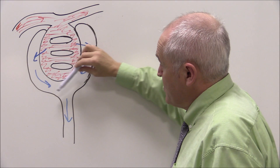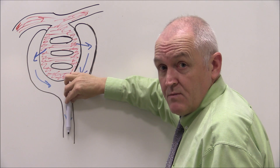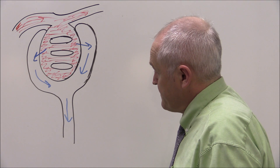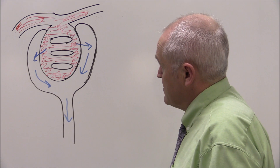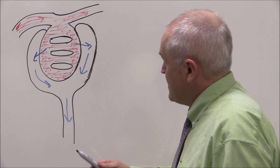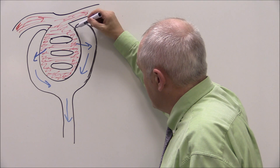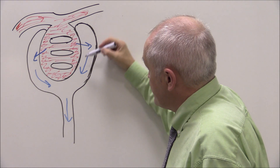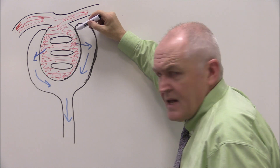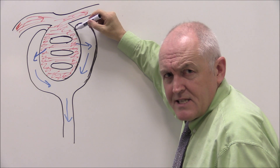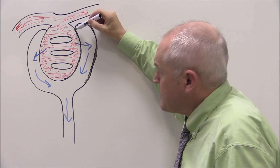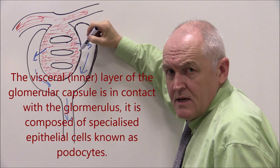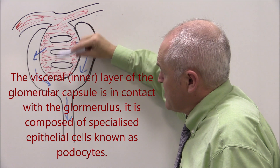Once formed, the fluid is going down into the proximal part of the nephron, the proximal tubule, and that will become the proximal convoluted tubule. The parietal layer is round about here — this is the parietal layer of Bowman's capsule — and the visceral layer is actually a layer of specialized cells called podocytes that surround the individual capillaries that make up this ball of capillaries called the glomerulus.